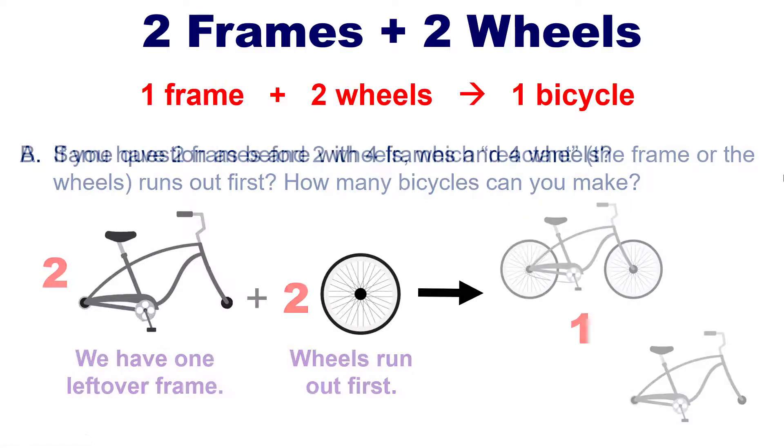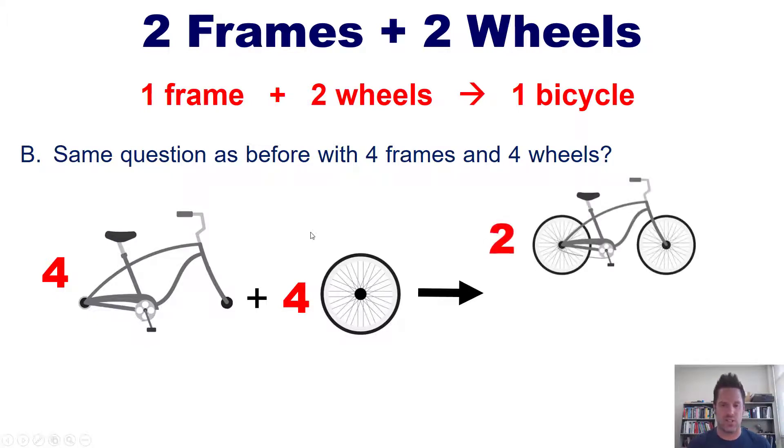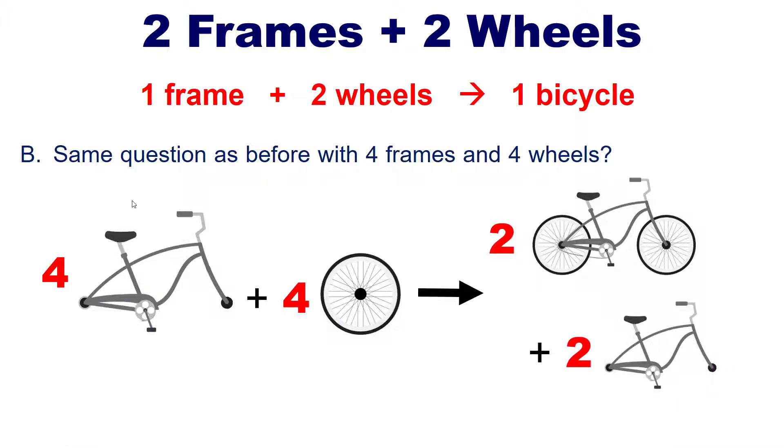Now to the next example. What if you had four frames and four wheels? Well, similar to the previous example, if you have four wheels you can make two bicycles because each bicycle requires two total wheels. But once you're done making those two bicycles, in the process consuming or using up two of your frames, you cannot make any more because you're all out of wheels. So you end up with two extra frames left over that cannot be turned into bikes because you have no more wheels.